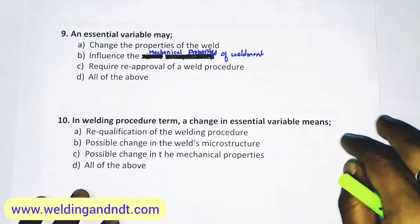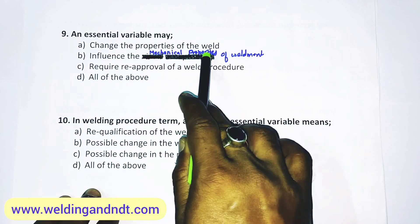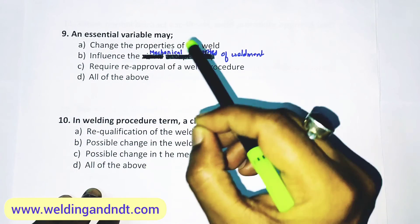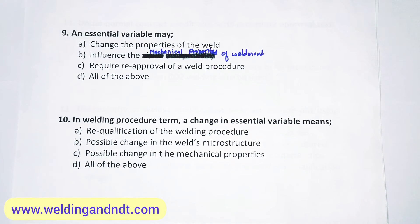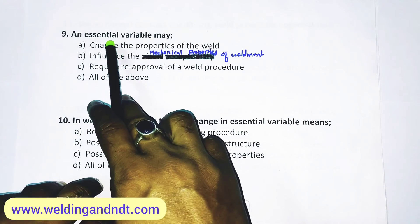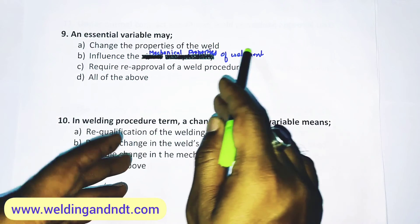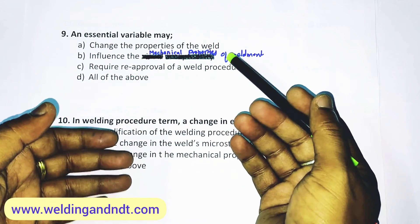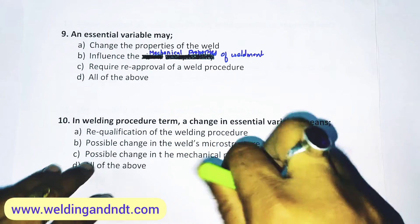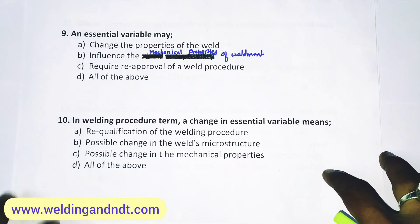Question number 9: An essential variable may change the property of the weld, influence the mechanical properties of the weldment, require re-approval of the weld procedure, or all of the above. The answer is D — all of the above. A change in essential variable changes the properties of the weld, influences the mechanical properties, and whenever you change the essential variable beyond the acceptable range, you need to re-qualify that welding procedure. So D is the answer.